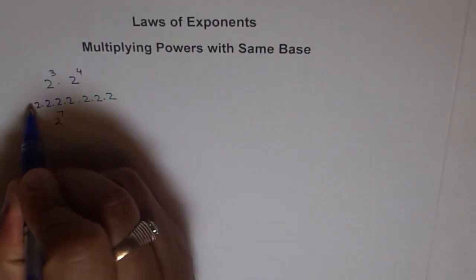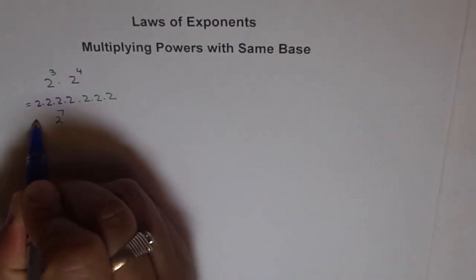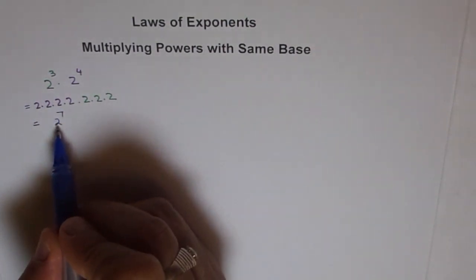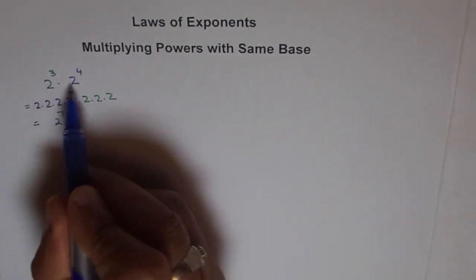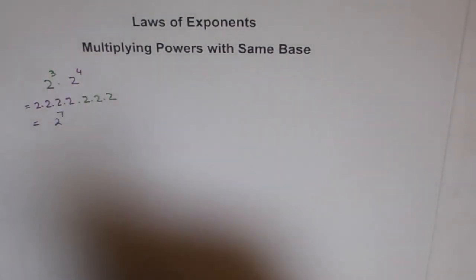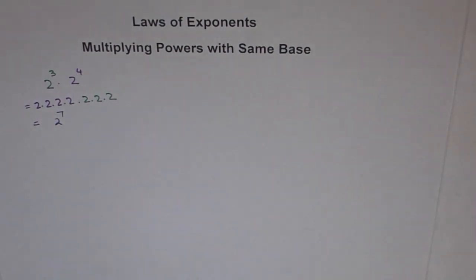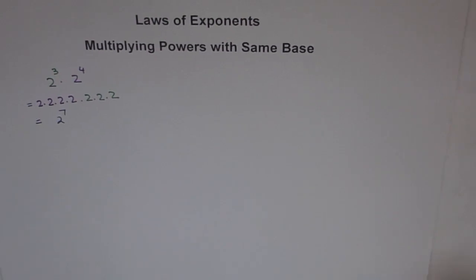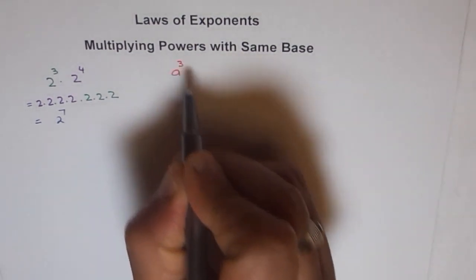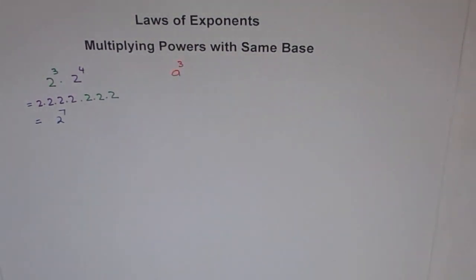So two to the power of seven. Effectively what we get here is the same base, which is two, and the exponent is the addition of three and four. Is it always true? Let's test it out with a general number — let's do a to the power of three times a to the power of five.